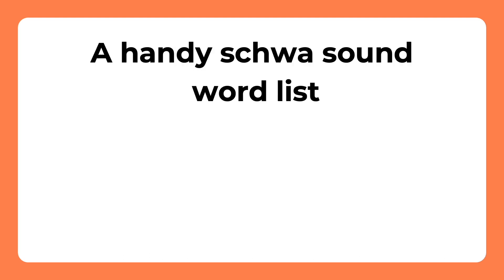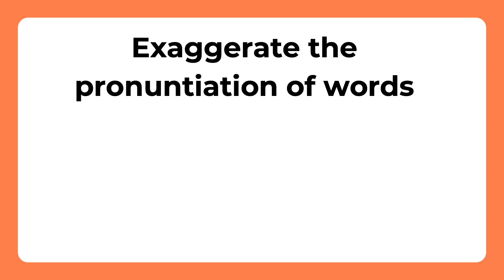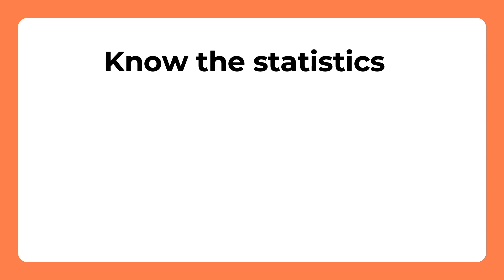Remember, for a handy and comprehensive schwa sound word list, check the video description — this material is 100% free. Exaggerate the pronunciation of words. Take a word such as 'balloon' — overpronounce it, and you'll end up pronouncing an A sound instead of a U sound: 'ba-loon'. If we didn't use the schwa sound, we would sound robotic. Say 'balloon' as if you were a robot — you'll pronounce it with an A sound. For those really struggling, it can help to know the statistics: from the most to the least common spelling, this is how vowels represent the schwa sound: A, E, I, O, U.